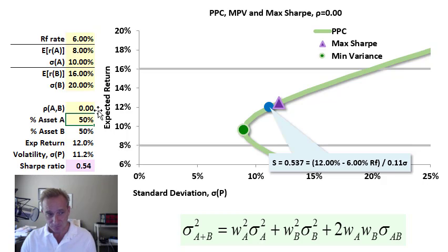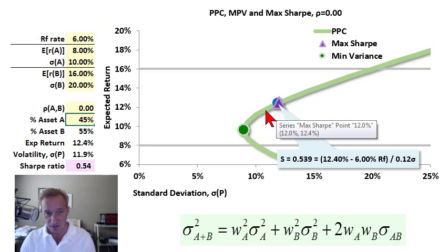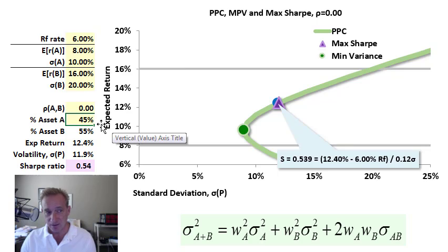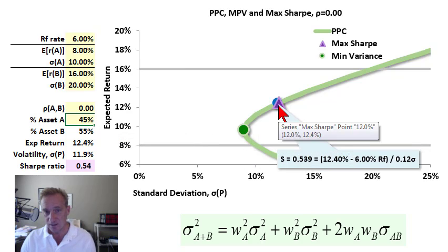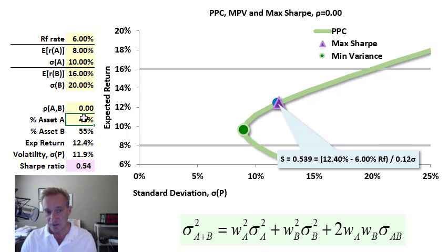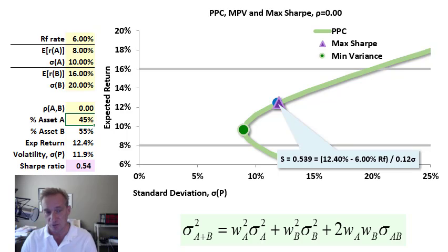I know from already calculating it that our optimal portfolio is at about 45-55. You can see I'm on the purple triangle. There are analytical solutions for both the minimum variance portfolio and the optimal portfolio, or also where the maximum Sharpe ratio is. It's very easy to get the minimum variance portfolio, less easy to get the optimal or maximum Sharpe ratio portfolio. But the analytical solution is in the spreadsheet if you want to download that.